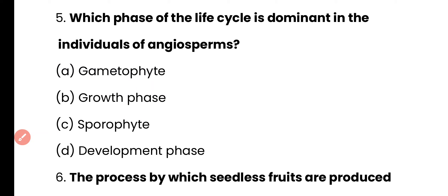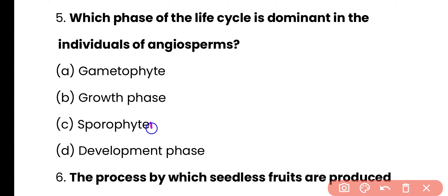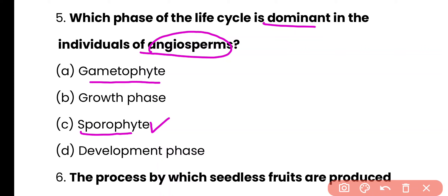Question number 5. Which phase of the life cycle is dominant in angiosperms? Gametophyte, growth phase, sporophyte, or development phase? The correct answer is option C. All vascular plants such as angiosperms have a dominant sporophyte, while non-vascular plants like bryophytes have a dominant gametophyte. Angiosperms are vascular plants, so the correct answer is option C.